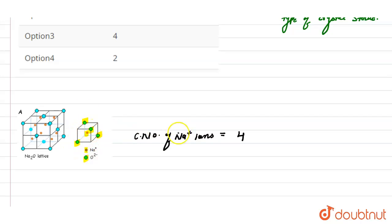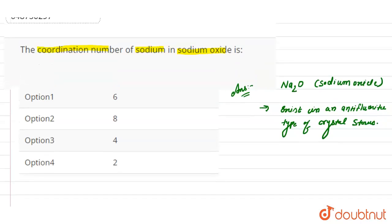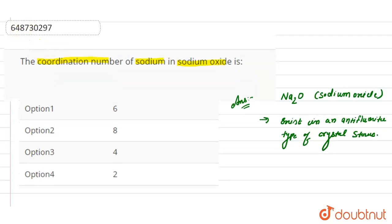So it means the coordination number of sodium in sodium oxide is four. So if we see the options here, option three will be our correct answer for this question. Thank you.